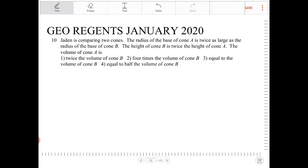It says that the radius of the base of cone A... So the radius of cone A is twice as large as the radius of the base of cone B. So that's two times the radius of the base of cone B.